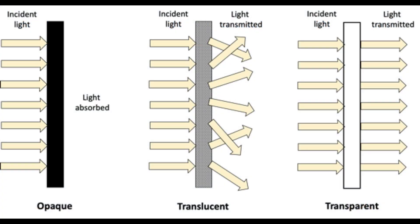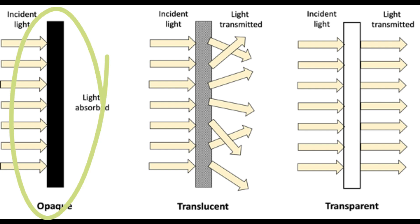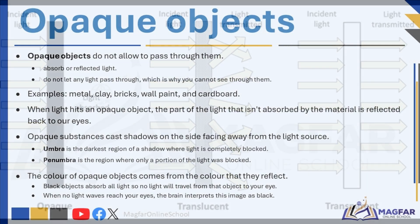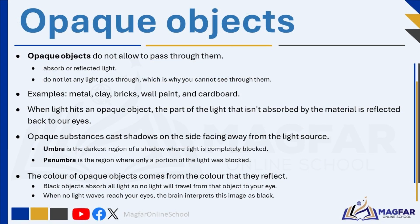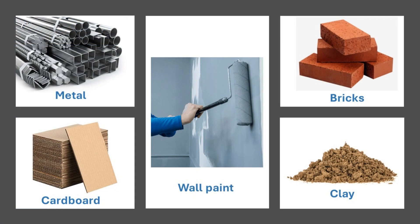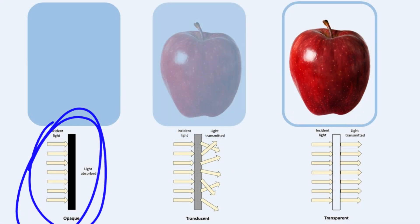Let us move on and talk about opaque objects. Opaque objects do not allow light to pass through them — they absorb or reflect light. In some cases they can do a little of both, absorbing some light and reflecting some at the same time. Common examples of opaque materials include metal, clay, bricks, wool, paint, and cardboard. These materials do not let any light pass through, which is why you cannot see through them.